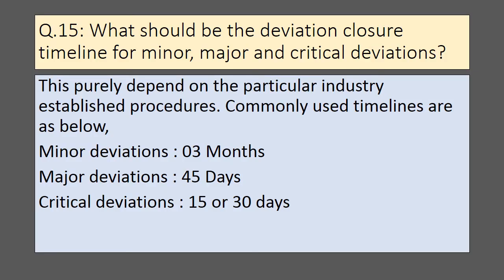What should be the deviation closure timeline for minor, major, and critical deviations? This purely depends on the particular industry's established procedures. Commonly used timelines are: for minor deviations, 3 months; for major deviations, 45 days; and for critical deviations, 15 to 30 days.